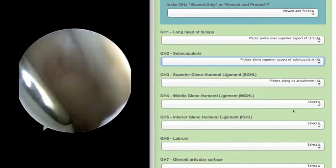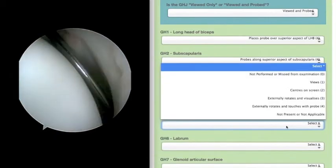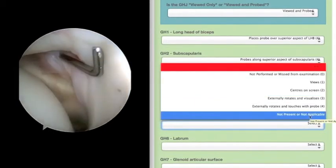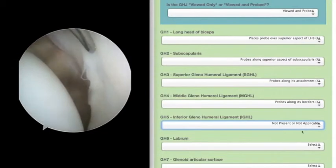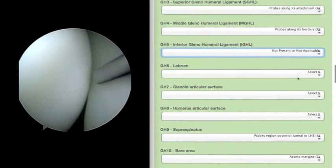During the procedure, the trainee is also evaluated for their ability to proceed in a logical fashion and the care with which they treat the articular surfaces. There is also the facility to mark a structure as absent, so that the trainee is not penalized in this case.